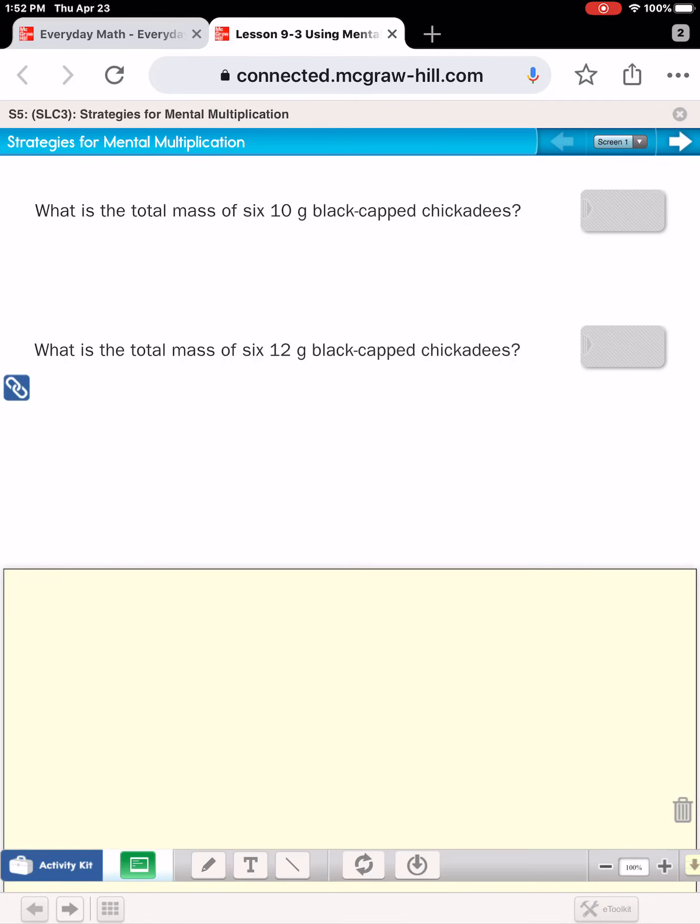All right, we are going to solve some more extended facts mentally using the break apart strategy. Let's look at some examples on the screen. The first question says, what is the total mass of six 10 gram black cap chickadees? So you do not need to be looking at the poster in your journal. You can just look at the screen. If we're trying to find the total mass of six 10 gram chickadees, we would just be thinking six times 10. And I think all of us can mentally multiply by 10 pretty easily and see that six times 10 would be 60 grams.